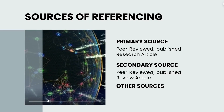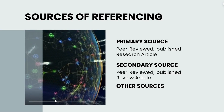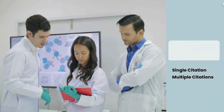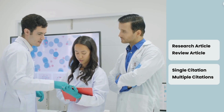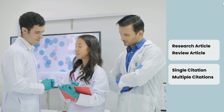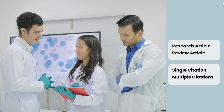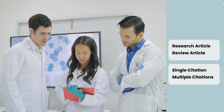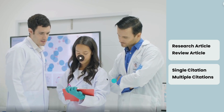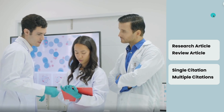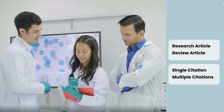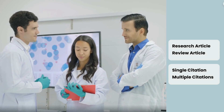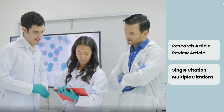Therefore we have to focus on primary sources and secondary sources that can be used as citations in our work. Research articles and review articles are the two main sources. Now the next question is single citation versus multiple citation — which part of your argument needs only one reference, and what are those sections that require multiple citations? We will discuss this in detail.